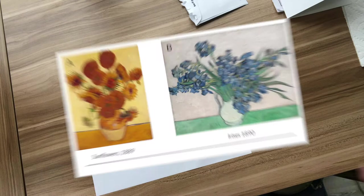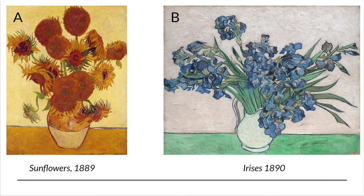Now let's begin. Look at the two pictures and think about how they are the same. Thinking about the middle part of your Venn diagram where the circles overlap, perhaps you could write down that they are both flowers, the flowers are both sitting in a vase, and the vases are sitting on a table.